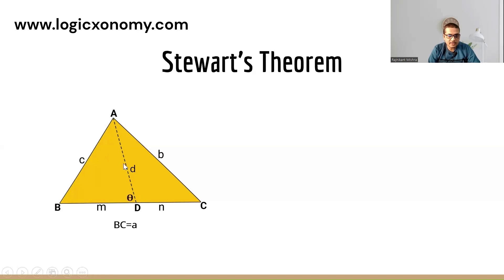Let angle ADB be equal to theta. Then angle ADC is equal to 180 minus theta, obviously, because BC is a straight line and these two angles are a linear pair.